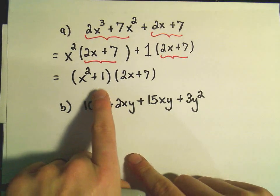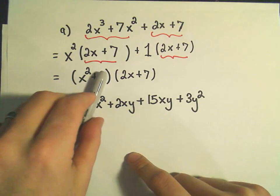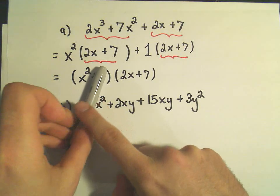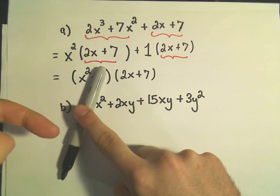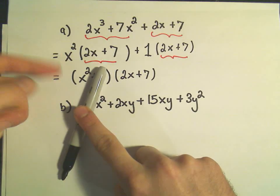And again, the reason that we can go from the second step to this third step, imagine if the positive 1 wasn't there. Well, to expand this out, what would you have to do? You would have to multiply x squared times all of that, which is what the first part says.